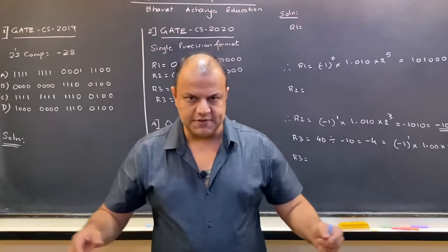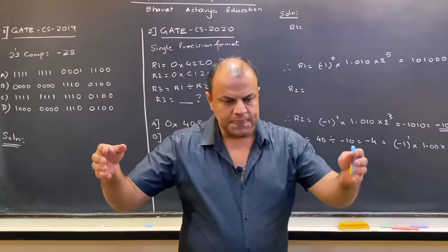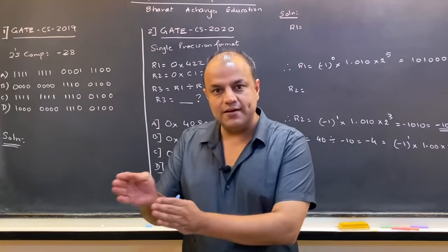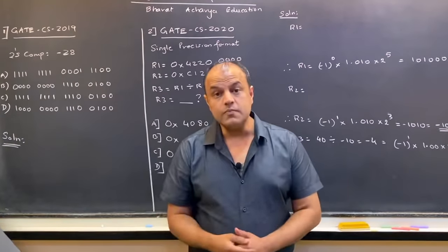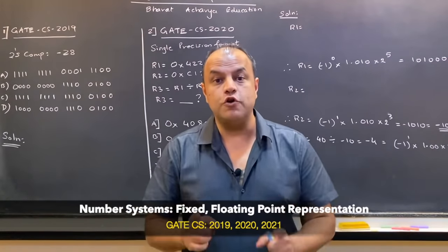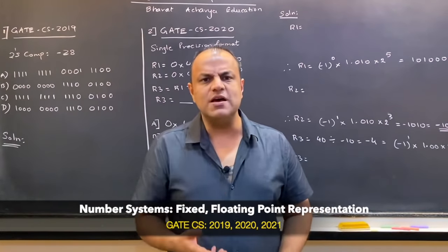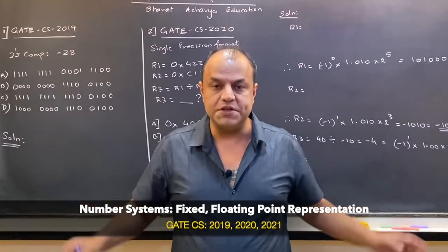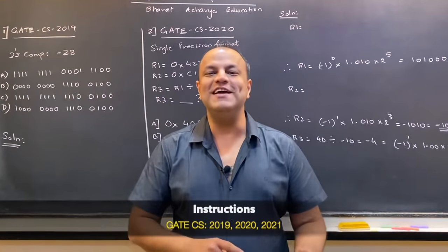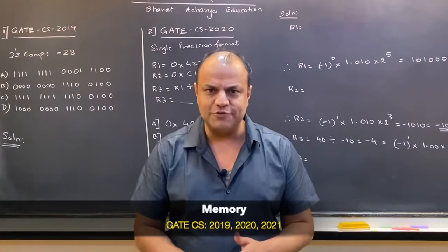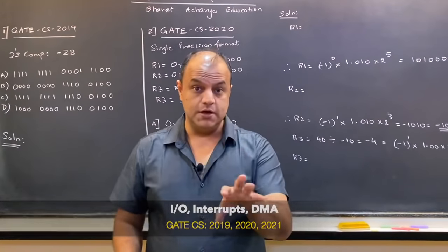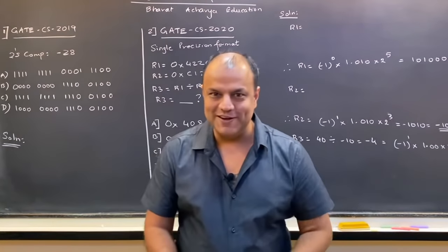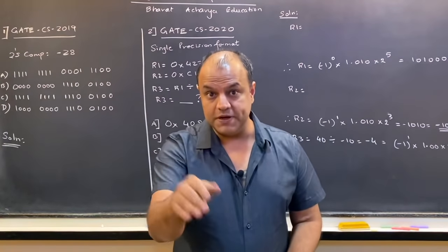I've taken the last three to four years' gate papers, sorted out the questions pertaining to the COA subject, and segregated them based on topic. Today's video is about questions from number systems — remember, that's how we started learning the subject. After this, we'll make videos for instructions, control unit, memory-based questions, and finally IO-based questions. In number systems, there are fixed point numbers, floating point numbers, and arithmetic logic operations based on those numbers.